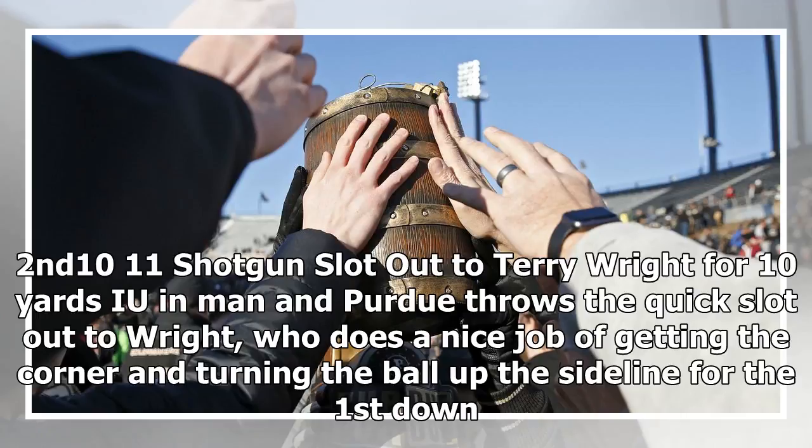Second and 10, 11 shotgun, slot out to Terry Wright for 10 yards. IU in man coverage and Purdue throws the quick slot out to Wright, who does a nice job of getting to the corner and turning the ball up the sideline for the first down.